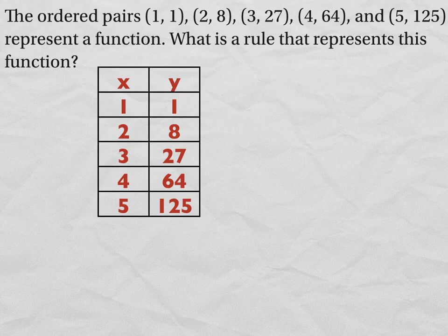Hopefully, you kind of see it either in the table or in the ordered pairs. 4 to 64, 5 to 125, those are all perfect cubes. 27 is a perfect cube, 8 is a perfect cube, or to the third power.